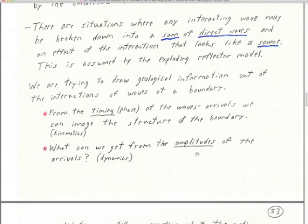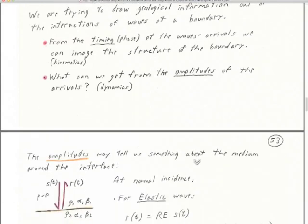I do want to ask the question: what can we get from the amplitudes of the waves? That's the dynamic question. If we know the amplitudes of the waves, we know something about the level of stress, level of strain — we can infer all that sort of thing. Can we get more than geometry and velocity out of the amplitudes of the waves? The amplitudes, if we can get them, can tell us something about the medium around the interface.